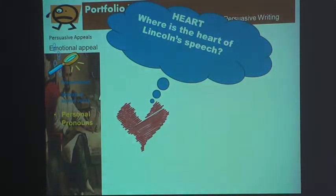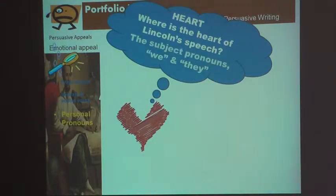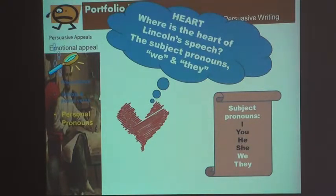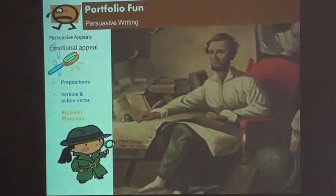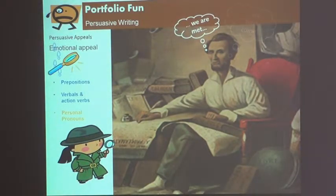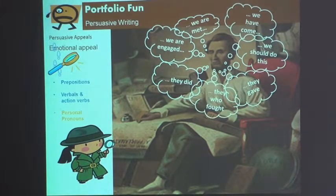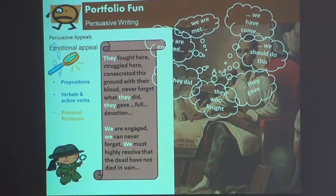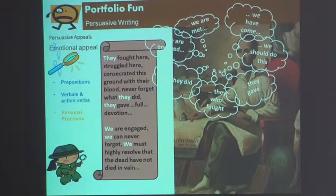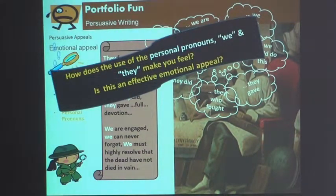Next, we are going to look at personal pronouns. Where is the heart of Lincoln's speech? The subject pronouns 'we' and 'they.' Remember subject pronouns: I, you, he, she, we, they. So detectives, let's get to work. We are met. We have come. We are engaged. We should do this. They did. They gave. They who fought. They fought here, struggled here, consecrated this ground with their blood. Never to forget what they did — they gave full devotion. We are engaged. We can never forget. We must highly resolve that the dead have not died in vain. How does the use of personal pronouns 'we' and 'they' make you feel? Is this another effective emotional appeal?